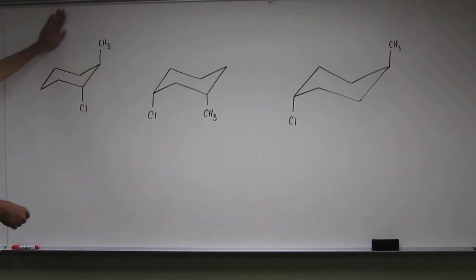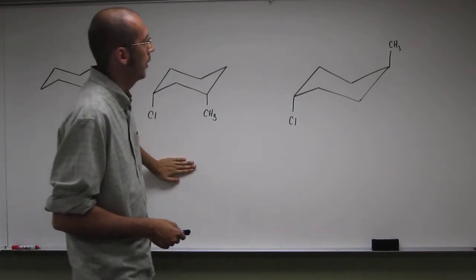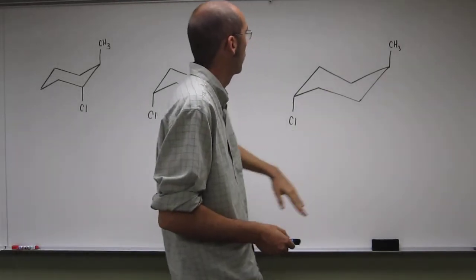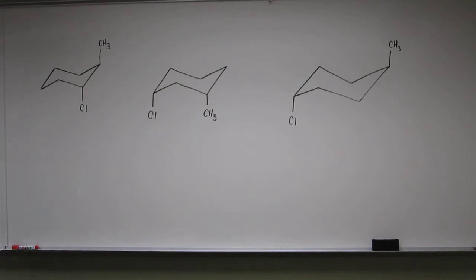This one's 1,2, this one's 1,3, and this one's 1,4. And we have them all in the conformer where both of the substituents on the cyclohexane ring are in the axial position.